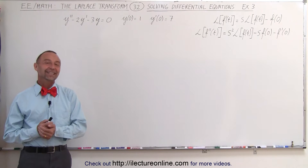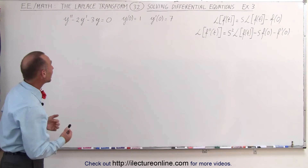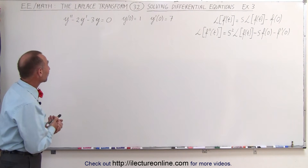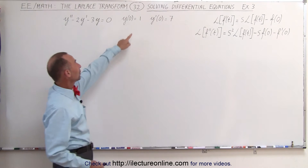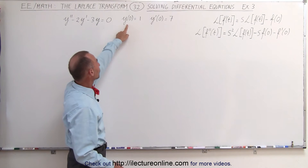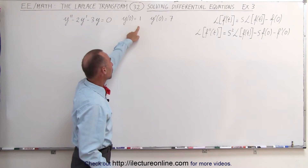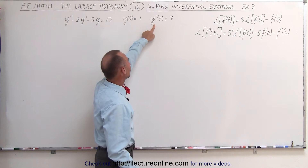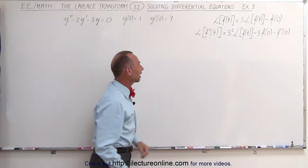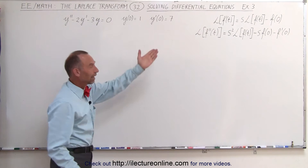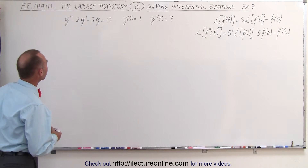Welcome to ElectronLine. Our next example is a second-order differential equation. It's homogeneous. It does have two initial conditions: the function evaluated at 0 is equal to 1, and the derivative of the function evaluated at 0 is equal to 7. We have some reference equations there to help us solve this problem.